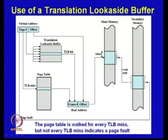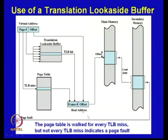The frame number may come from the TLB if it is a TLB hit; if it is a TLB miss, it will come from the page table. From the page table you get the frame number where the physical memory address is available. That offset is concatenated with the frame number to get the real address of main memory. If you do not get that entry in the page table, it will lead to a page fault, and page fault will force you to get the information from secondary memory. The page table is checked for every TLB miss, but not every TLB miss indicates a page fault — the entry may still be present in the page table.